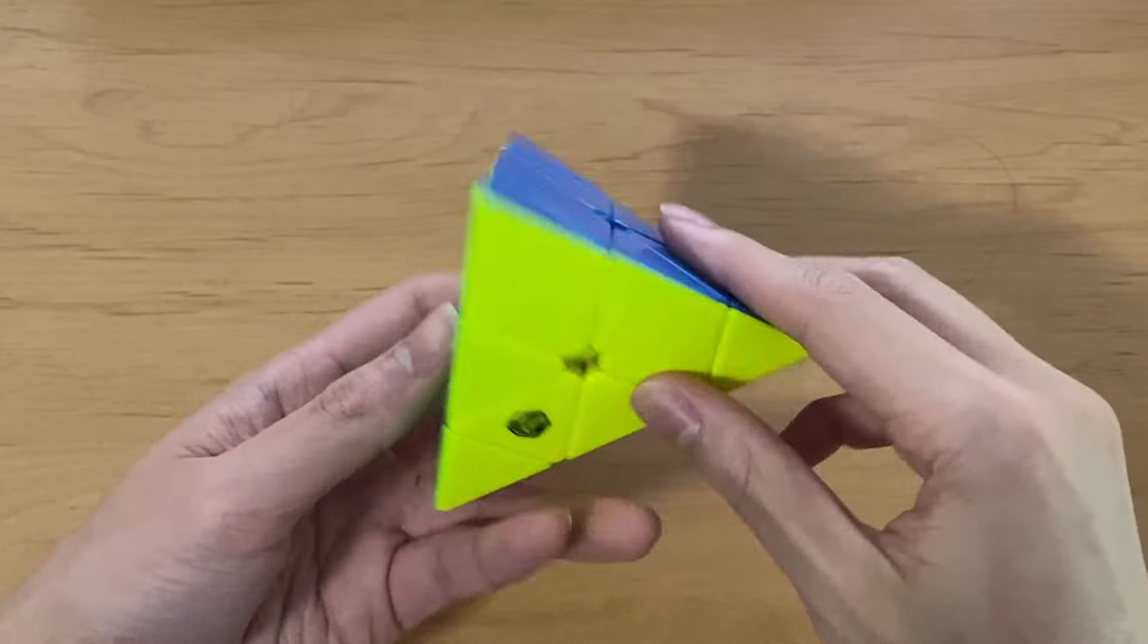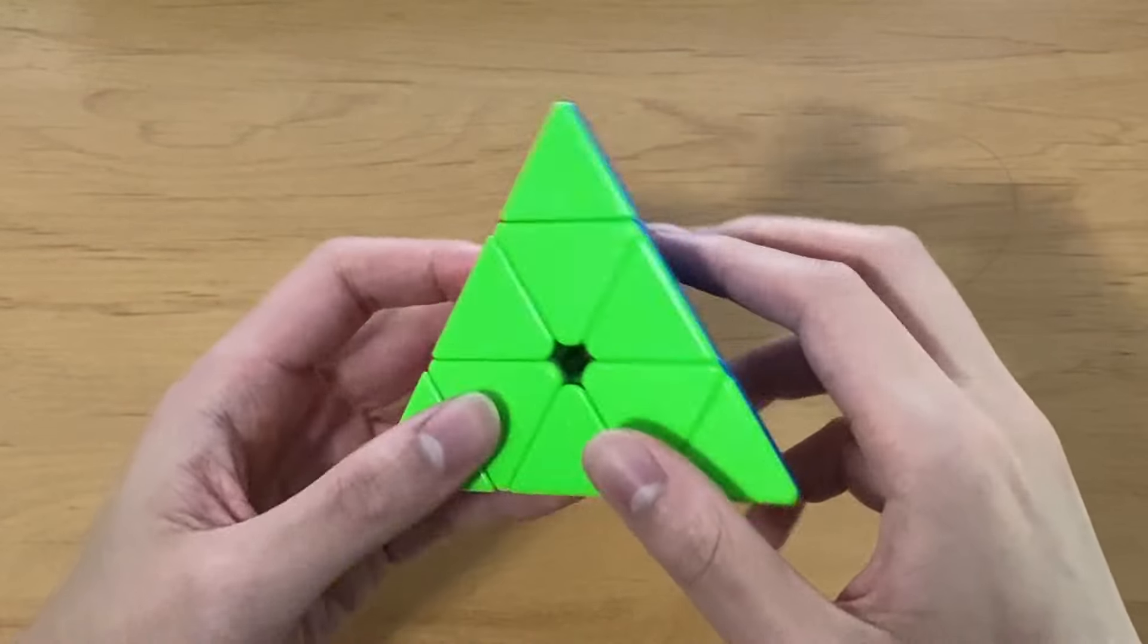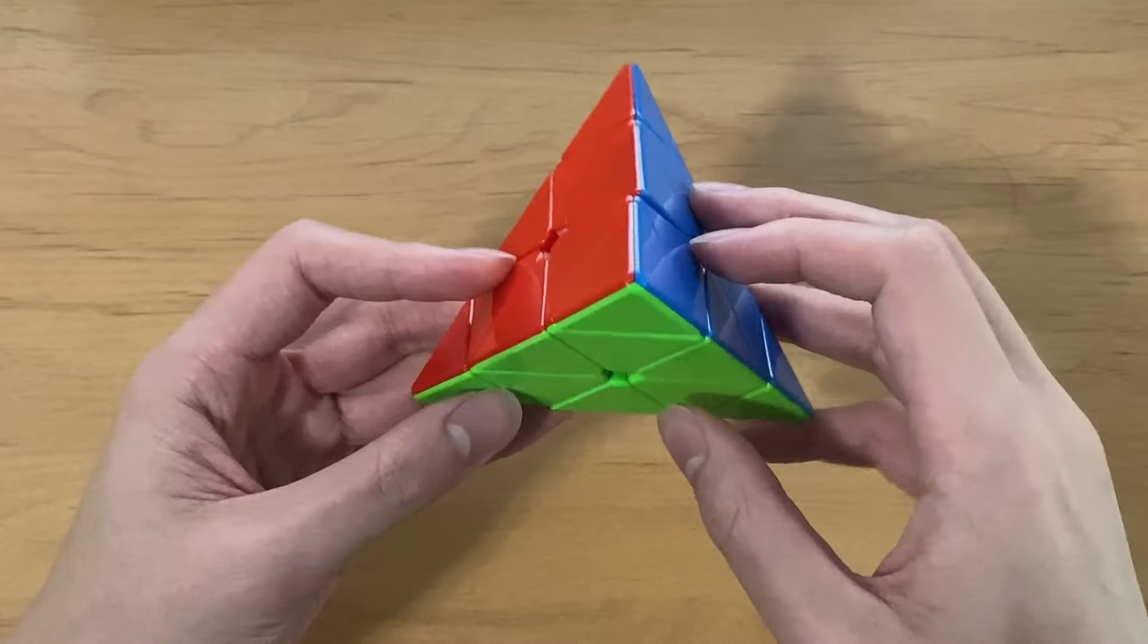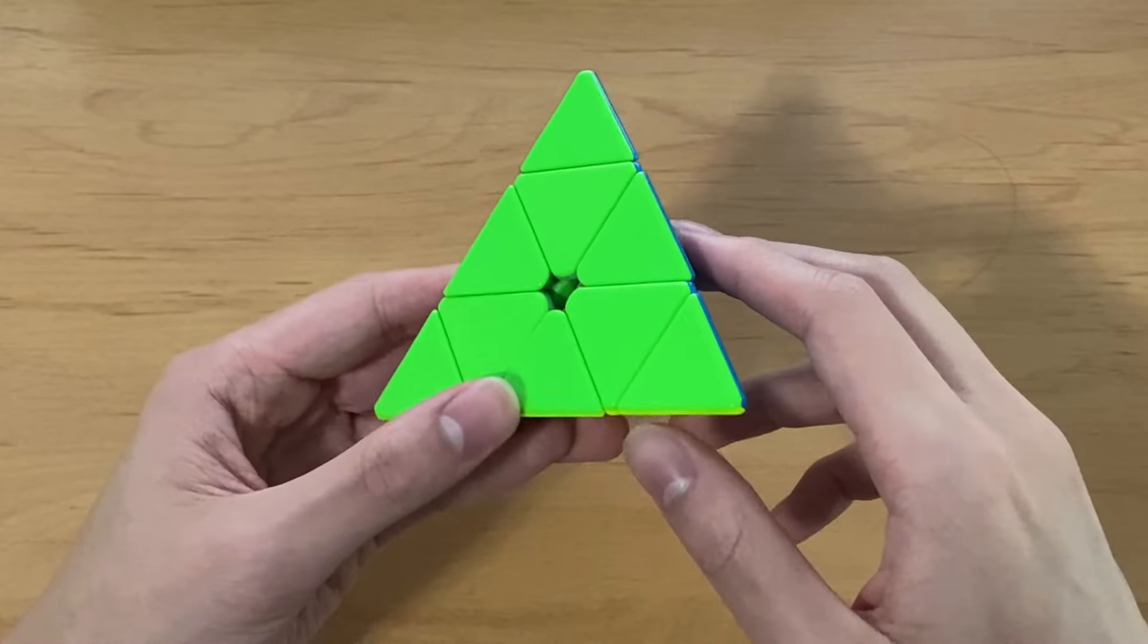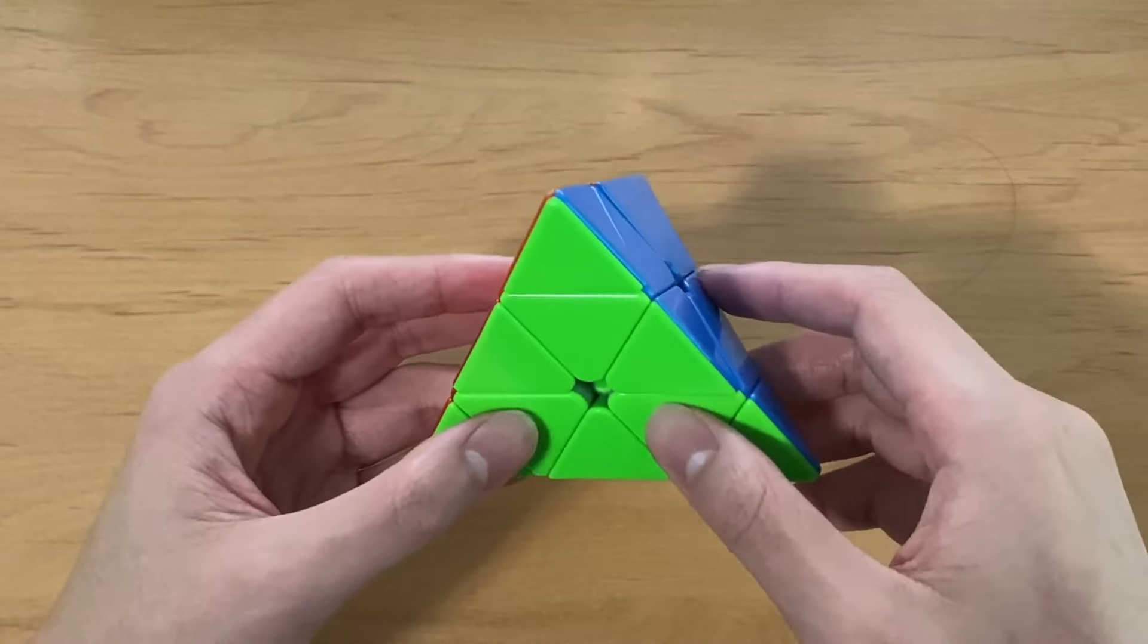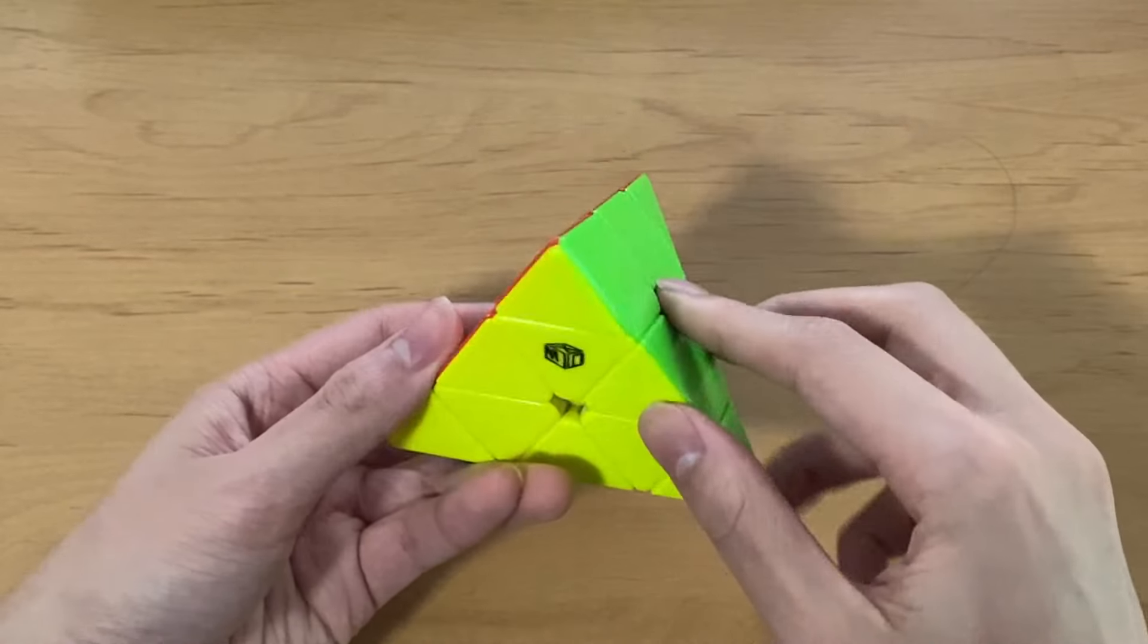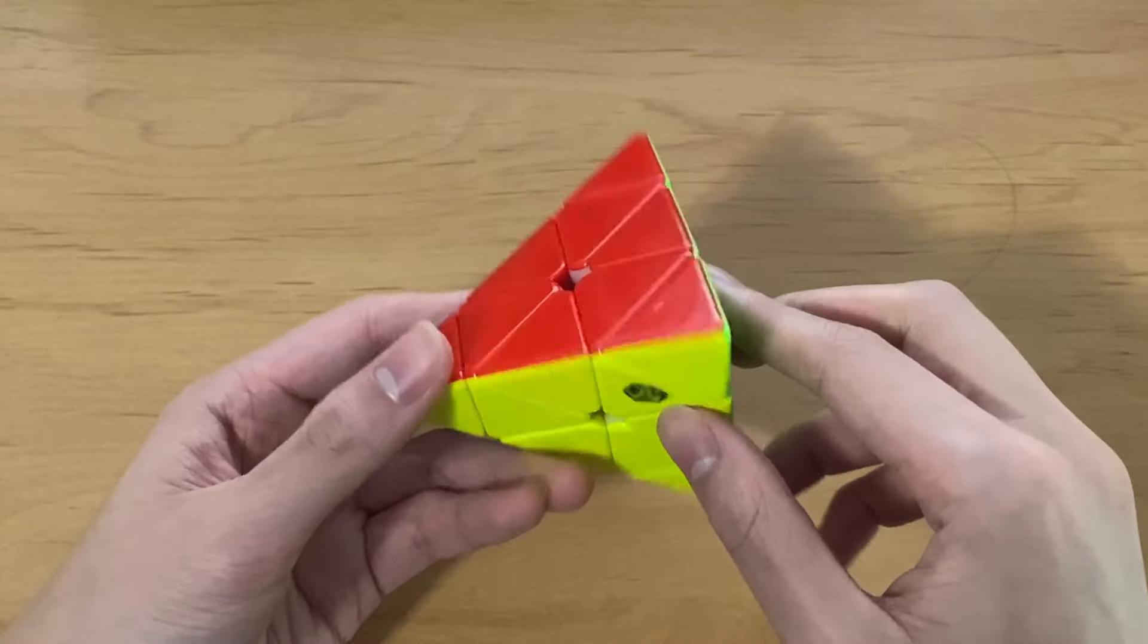For Pyraminx, I use the Bell V1. This is a super old cube from like 2017, but I find that it still turns pretty well and I still use it. I know a lot of people use like the Weylong instead. I've tried a Weylong and I don't really like it that much, so I just use this cube instead. I'm not that fast at Pyraminx, so it really doesn't matter. But if you are more serious about Pyraminx, I would recommend getting the Weylong instead. I'm pretty sure most people use that.